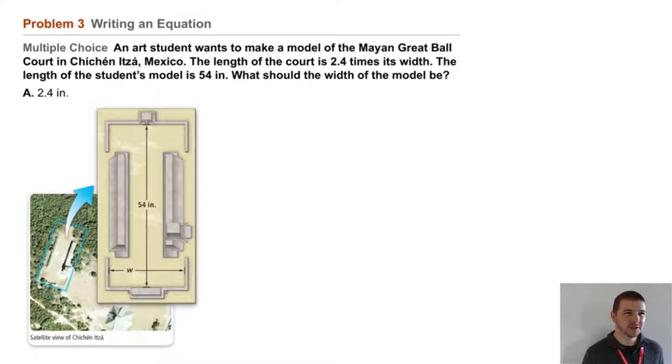Our choices are A, 2.4 inches, B, 11.25 inches, C, 22.5 inches, and D, 129.6 inches.